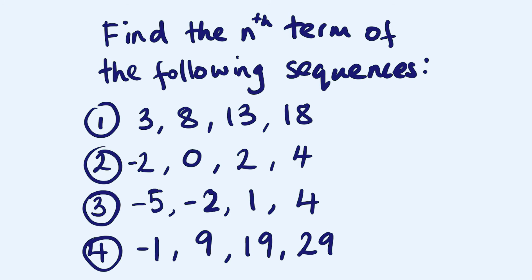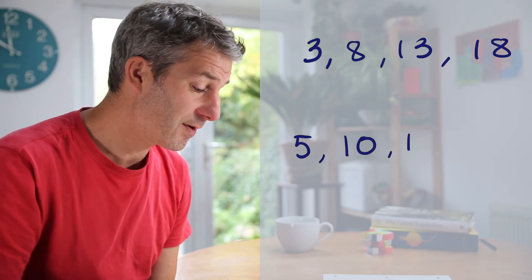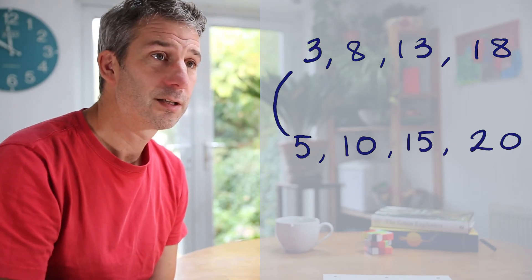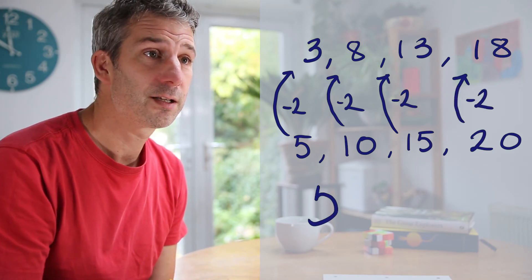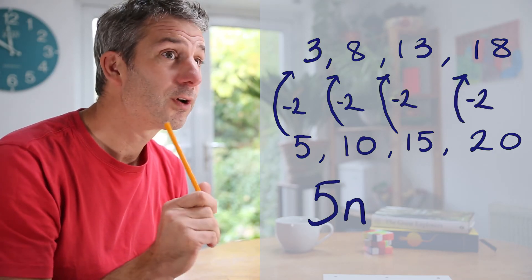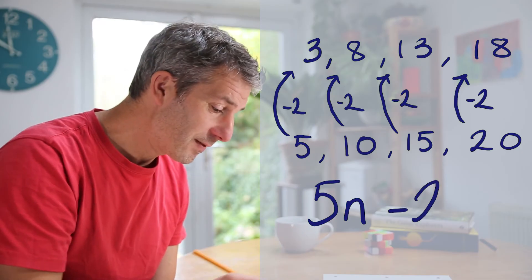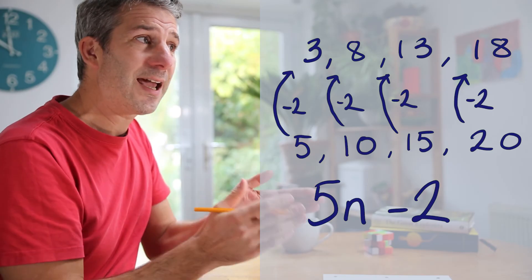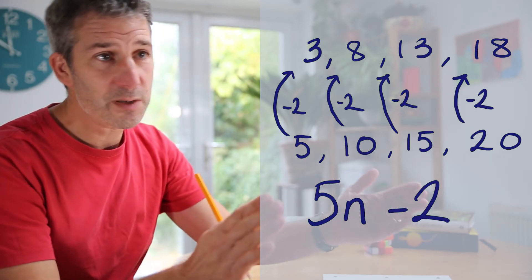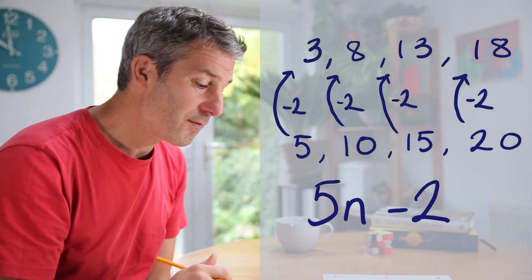Let's go through those answers. The first one was 3, 8, 13, 18. Rod, what did you get for that? It's the five times table — it's going up in fives. It's gone down two, so it would be five n minus two. Exactly. It's going up in fives so five n, but it's two less than the five times table — it's like the five times table moved down two places. So five n minus two. Brilliant.